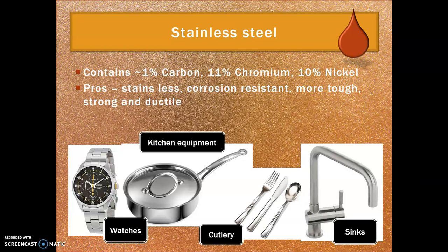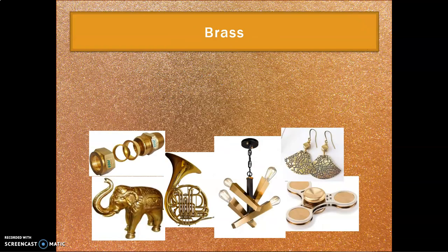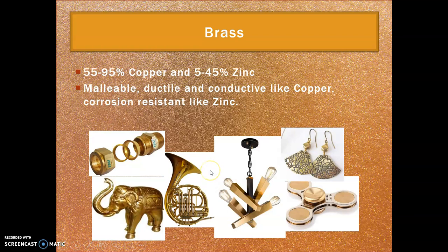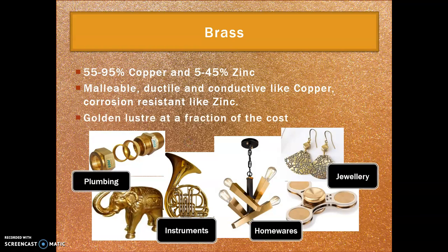Our non-ferrous alloy is brass. Brass is 55 to 95 percent copper and 5 to 45 percent zinc — the quantities vary. It has a lovely golden-like colour because of its high copper content, but the zinc offsets it so it's not quite so red. It's really malleable, ductile, and conductive like copper, but corrosion resistant like zinc — taking the best properties from each. It's used for plumbing, musical instruments, and homewares, and its gold-like lustre makes it great for jewellery at a fraction of the cost of gold.